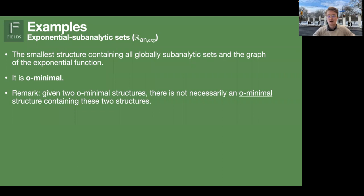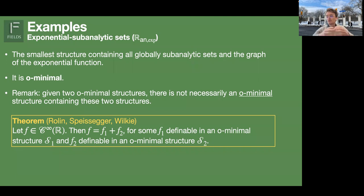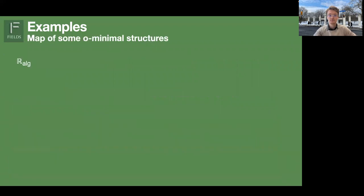In fact, there is a theorem giving an example of two O-minimal structures that you cannot merge. It says you can take any smooth function and write it as a sum of two functions, each definable in an O-minimal structure. For instance, if you take the sine function, you can write it as a sum of two such functions — but then these two O-minimal structures cannot be merged, because the sine function would become definable in the larger structure. So in general, you cannot just take the union of O-minimal structures.